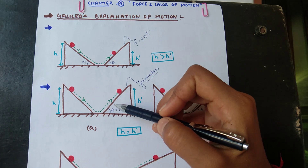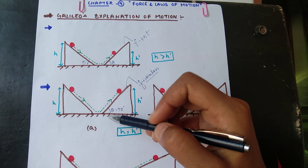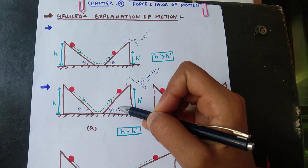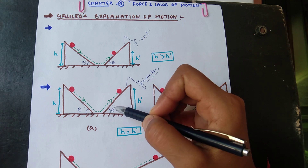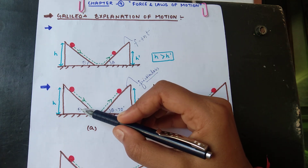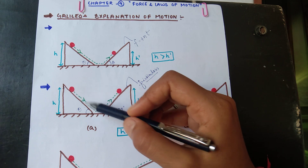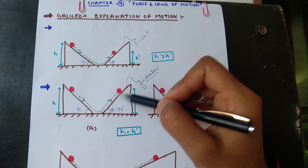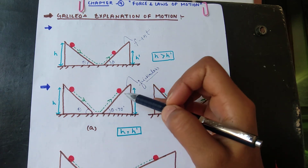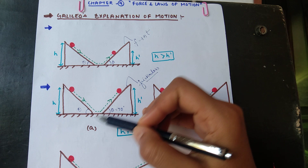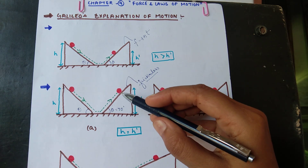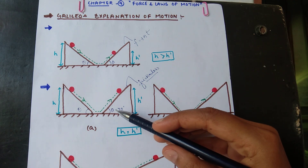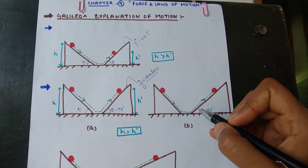Afterwards, he replaced the friction surfaces with frictionless surfaces. He took two frictionless inclined surfaces and kept both at the same angle — let's say theta equals 70 degrees. When he dropped the ball, the ball on the other side also reached the same height, and kept moving to the same height, as it was a frictionless surface and no force was acting on the ball to stop it.